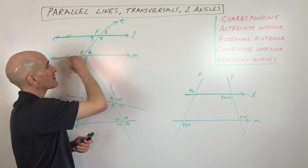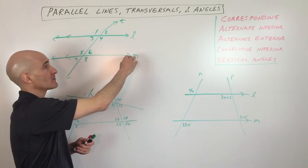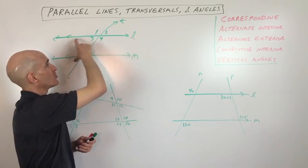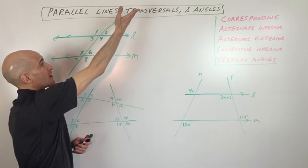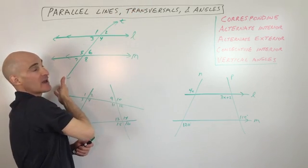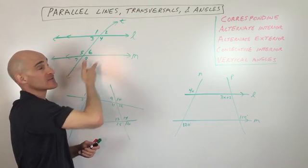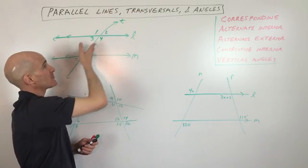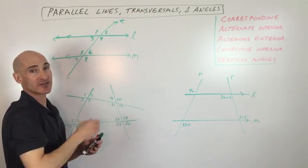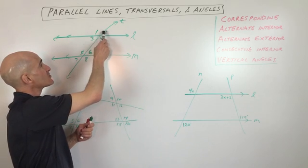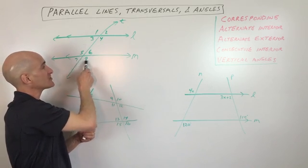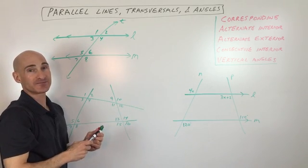When you have two parallel lines — they don't cross, they keep going — cut by a third line called a transversal, which traverses or cuts across those two lines, you can see that there are eight angles that are formed.